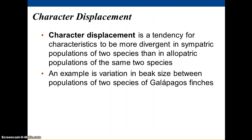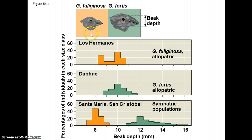Competition, niche, and resource partitioning can lead to what we call character displacement. This happens especially when species live in close contact — what's described as living sympatrically — as opposed to allopatric, where two species don't really live together. For example, here are two species of finches from the Galapagos — Darwin's famous finches. On one island you only have one species and its beak size encompasses a certain range; on Daphne, a different island, you have the other species and its beak size encompasses a similar range, with a lot of overlap.